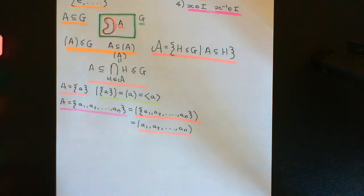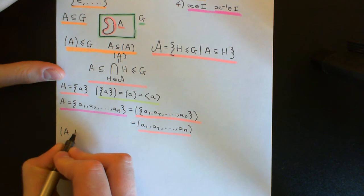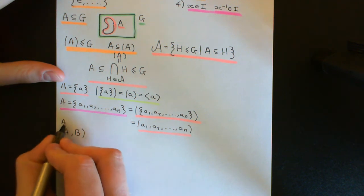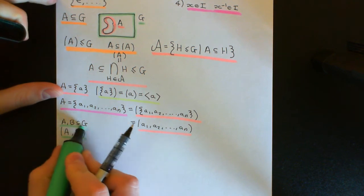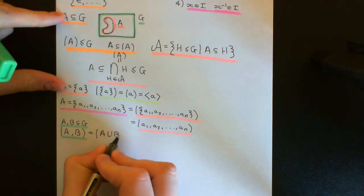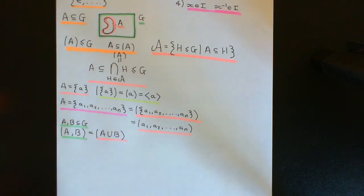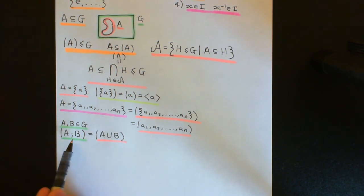If you want to talk about the subgroup generated by two subsets, we write it as the subgroup generated by A, then a comma for AND, and B. This means the subgroup generated by A and B, where A and B are both subsets of G. This will be the smallest subgroup of G that contains the subset A and the subset B. Another way of writing this would be the subgroup generated by the subset A union B, but you will very rarely see it denoted that way. Instead you would see it written as the subgroup generated by A and B. The two things are identical.